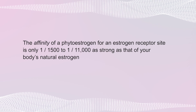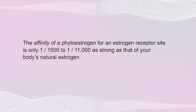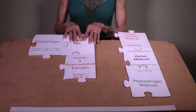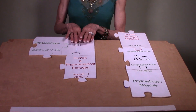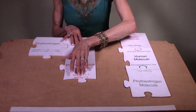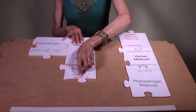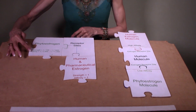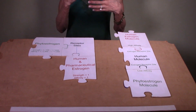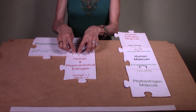The affinity of a phytoestrogen for an estrogen receptor site is only one fifteen-hundredth to one eleven-thousandth as great as that of your body's natural estrogen. So here's a receptor site — if we say the human estrogen's level of attraction is one, compare that to the phytoestrogen's attraction, which is only one fifteen-hundredth to one eleven-thousandth as strong. The estrogen your body used to have was much more likely to bind to a receptor site than a phytoestrogen.